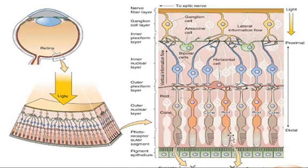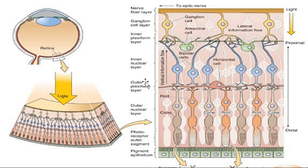Starting from the choroid side outward, the first layer is the pigment epithelium. On that we have photoreceptors, which have three parts: the outer segment, then the outer nuclear layer (the nucleus), and then the outer plexiform layer (the synaptic terminal forming a plexus). Then we have other cells with an inner nuclear layer and an inner plexiform layer, where those cells synapse on ganglionic cells.